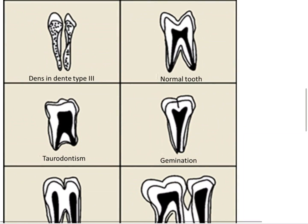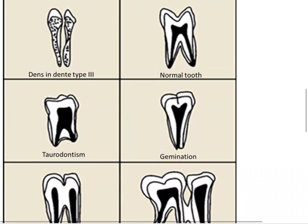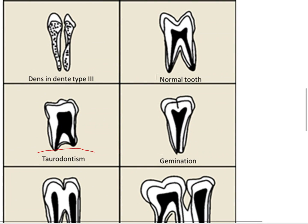There is also something called taurodontism. In taurodontism, we have an enormously large pulp chamber. The pulp chamber is very large, which is why it is known as the bull's teeth.